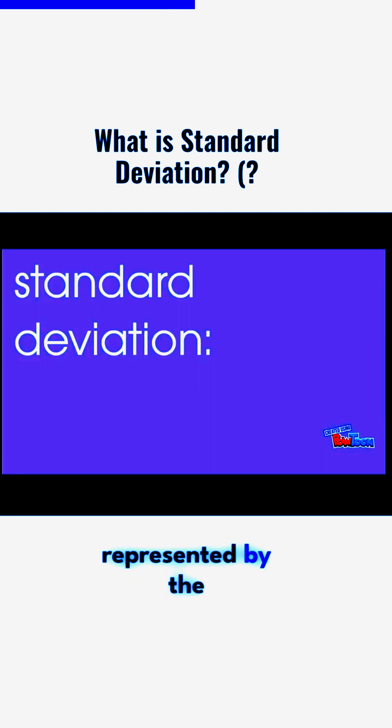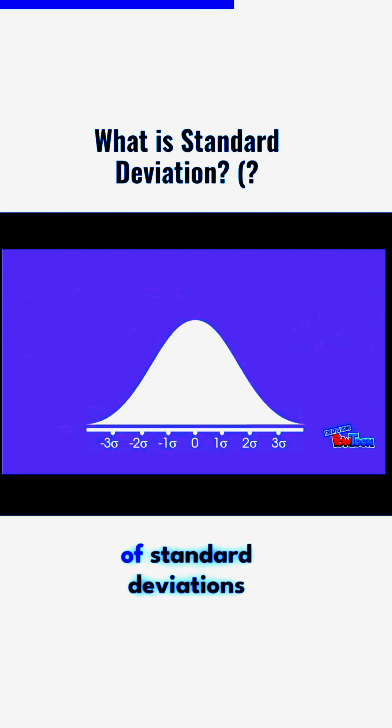Standard deviation is represented by the lowercase Greek letter sigma. A data point's distance from the mean can be measured by the number of standard deviations that it is above or below the mean.